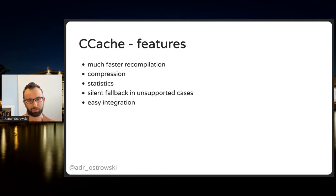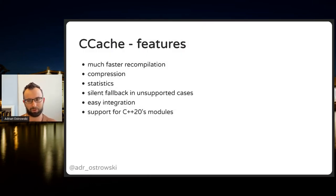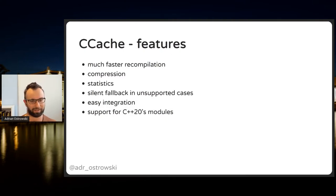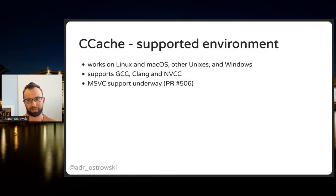A lesser-known feature of Ccache is that it already supports C++20 modules, though only for Clang and it requires setting a few options. Ccache is multi-platform — you can use it on Linux, macOS, and Windows, among others. Several compilers are supported: GCC, Clang, and NVIDIA's CUDA compiler.